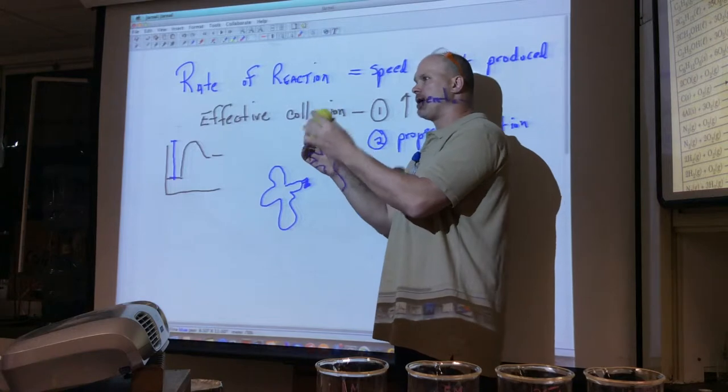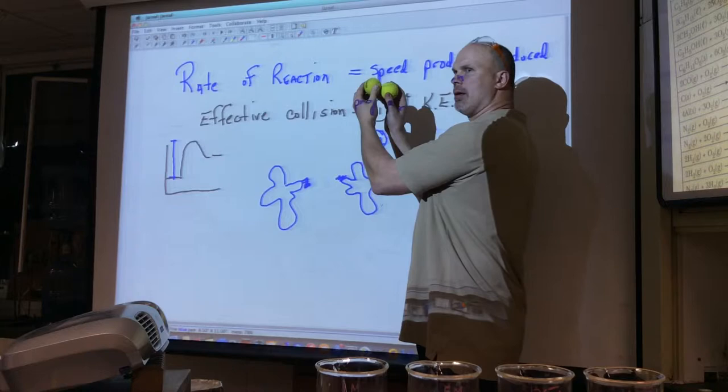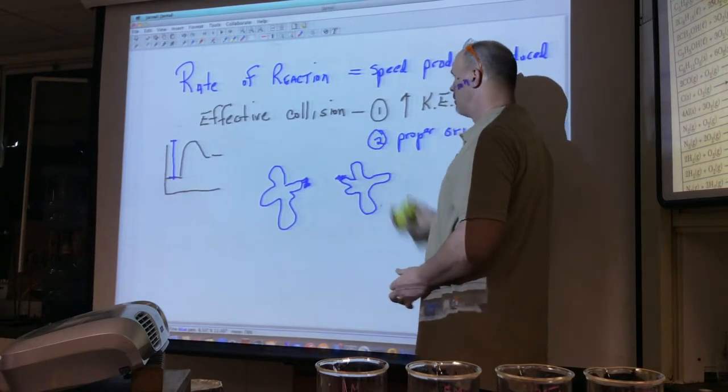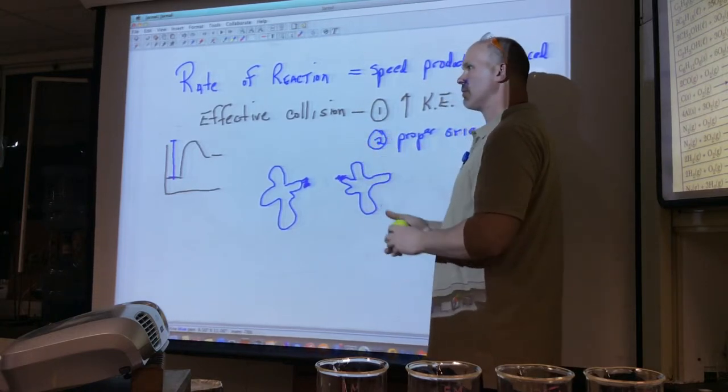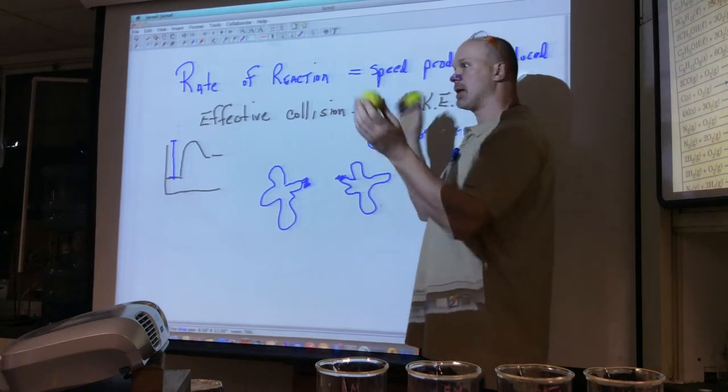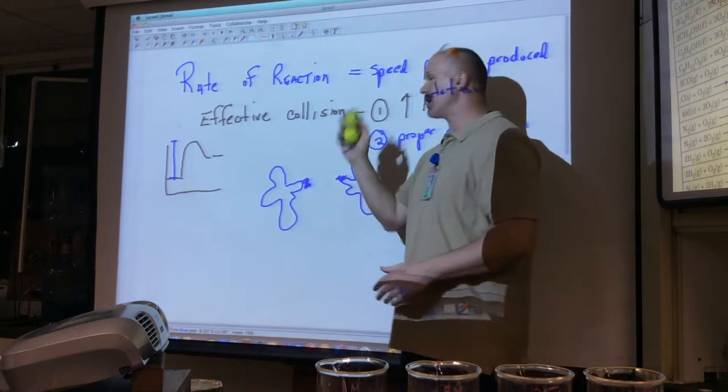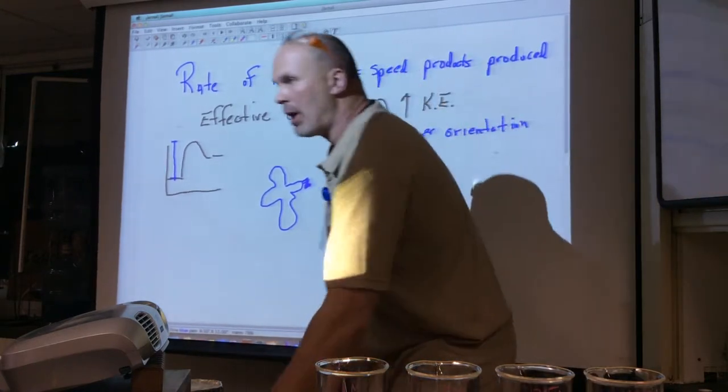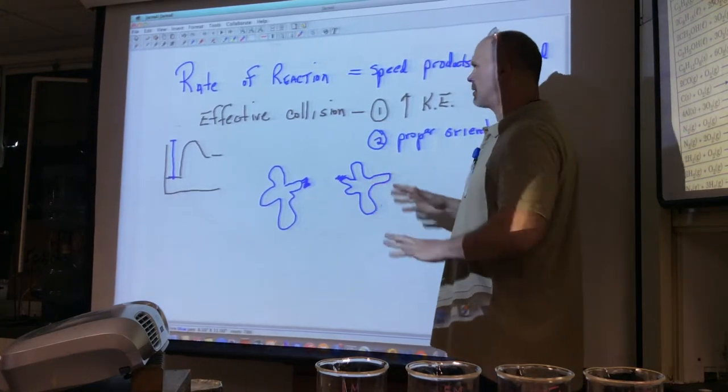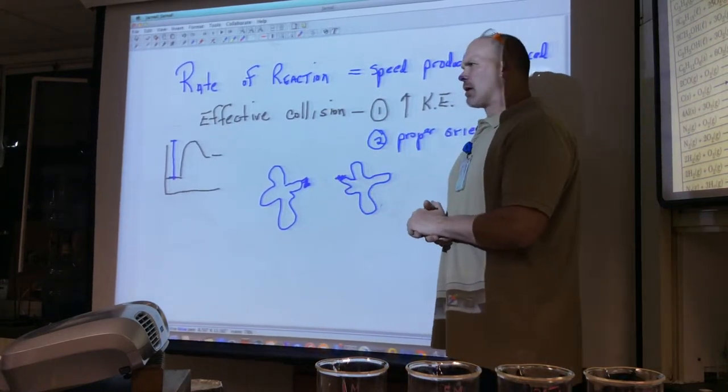So you have two atoms, if they have enough kinetic energy to overcome their repulsive forces, and if they collide with the right spot, orientation, what do you have? You've got a bond, a reaction. Two individual atoms come together, and they stick together.